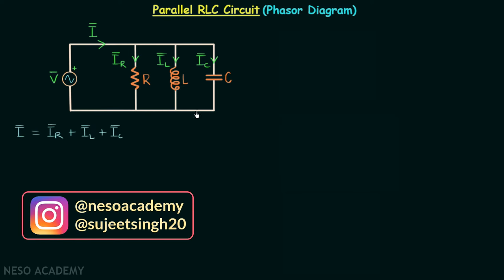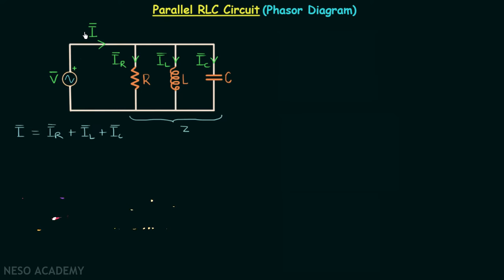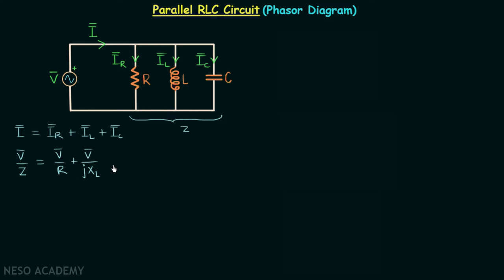The resistor, inductor, and capacitor together will offer an impedance equal to Z to the current flow. When we divide V phasor by this impedance we will have the net current phasor. So I phasor equals V phasor over Z. IR phasor equals V phasor divided by R. IL phasor equals V phasor divided by jXL. And IC phasor equals V phasor divided by negative jXC.